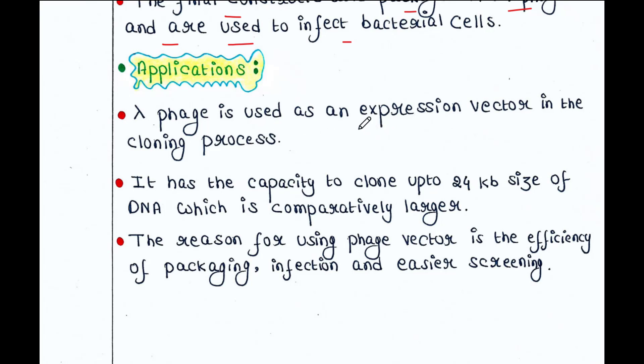Lambda phage is used as an expression vector in the cloning process. It has the capacity to clone up to 24 kb of DNA, which is comparatively larger than other vectors. The reasons for using phage vectors include the efficiency of packaging, infection, and easier screening. The infection rate is very high because it is a natural process — viruses naturally tend to infect bacteria, so mixing bacterial cells with phage viruses results in efficient DNA delivery into the bacterial cytoplasm.